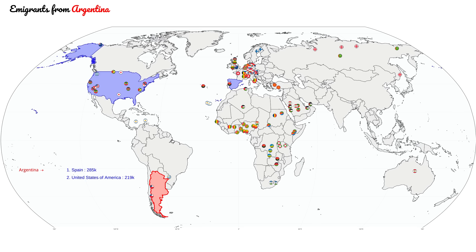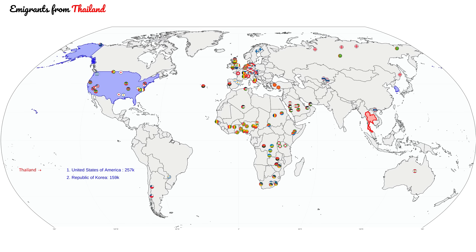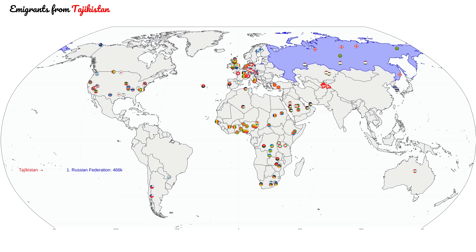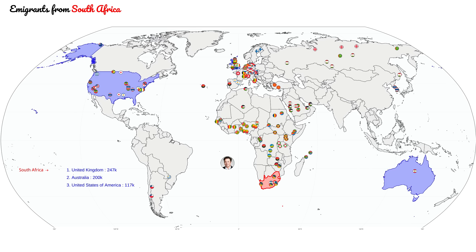It is of course easier to move to countries where you already know the language. We can see it clearly for South Africa, from which people have moved to Australia, the UK, and the United States. One of them was Elon Musk.